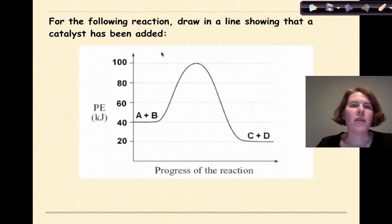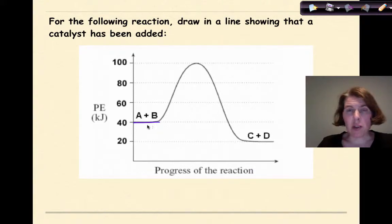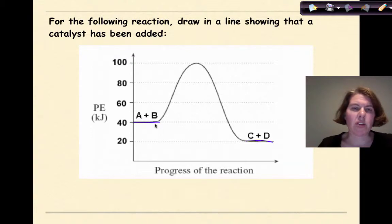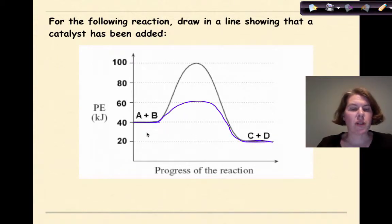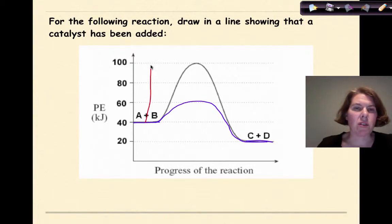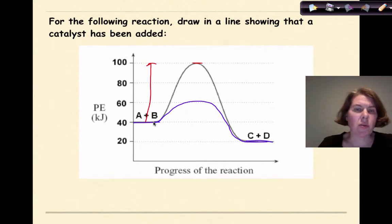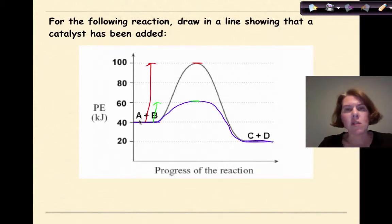Let's do the same thing to this diagram. For the following reaction, draw on a line showing that a catalyst has been added. Starting with A plus B — the potential energy of our reactants — we'll get to C plus D, the potential energy of our products. The black line represents the uncatalyzed reaction. We go up a little bit to show the activation energy has decreased, then come down to meet the potential energy of the products. The initial activation energy goes from the reactants all the way to the top of the activated complex, but with a catalyst it only goes up to the lower peak of the new blue line. The catalyst lowers the activation energy — it doesn't touch delta H, nor the potential energy of reactants or products.